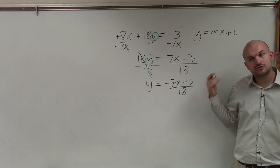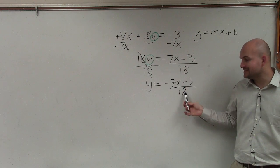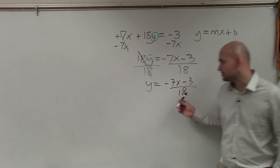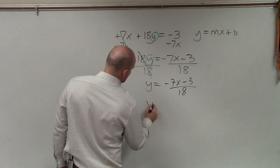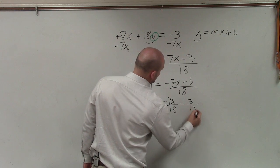So to complete it in slope-intercept form, we need to understand that this is negative 7x minus 3 being divided by 18, meaning I have to divide 18 into both of those terms. So it really looks like negative 7x divided by 18 minus 3 over 18.